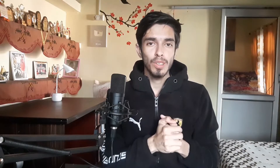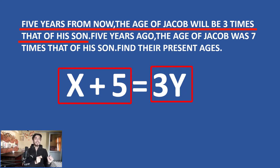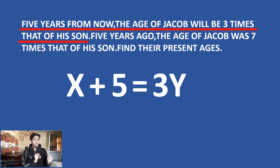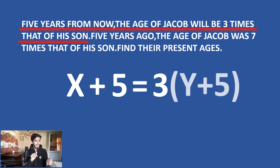Most word problems set traps that you can fall into. Read this line again carefully: five years from now Jacob's age will be three times that of his son's age. We added five years to Jacob's age, but we also need to add five years to his son's age, because five years from now his son's age will also increase by five. So the real equation is x + 5 = 3(y + 5).